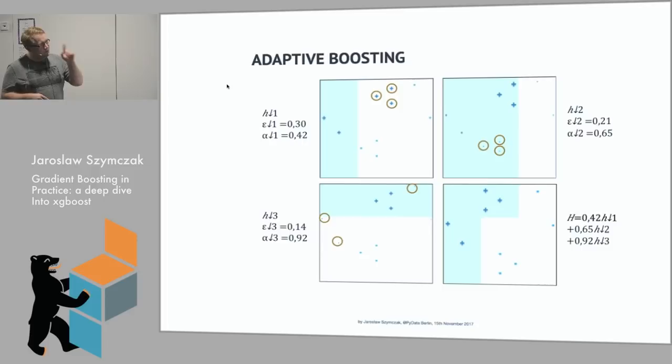Then you increase the weights of these things that you made errors on and decrease the weights on the things that you classified correctly. You fit your model again. You repeat it for some number of rounds. And at the end, based on the training errors that you made on each of these rounds, you sum this to your final model. And in this toy example you can see that actually with these simple classifiers, we created something that is more complicated.